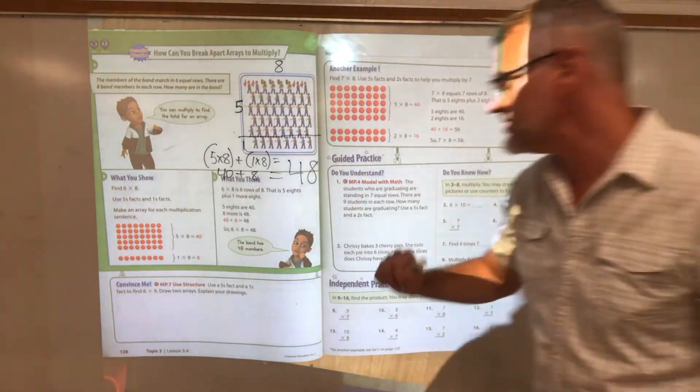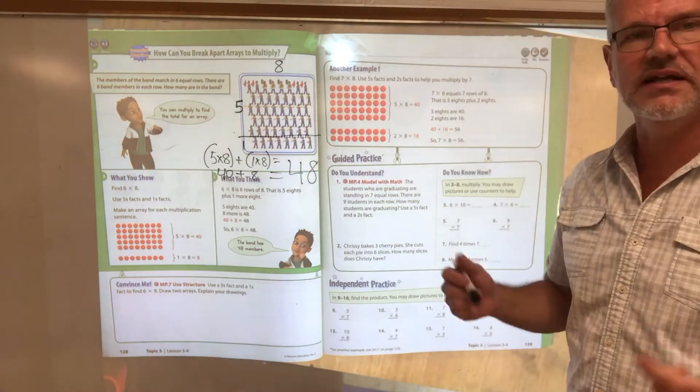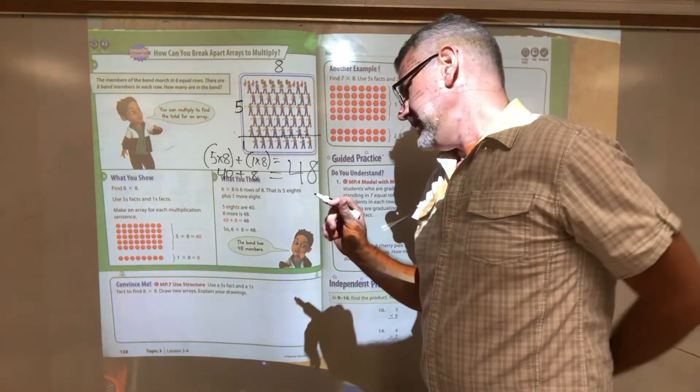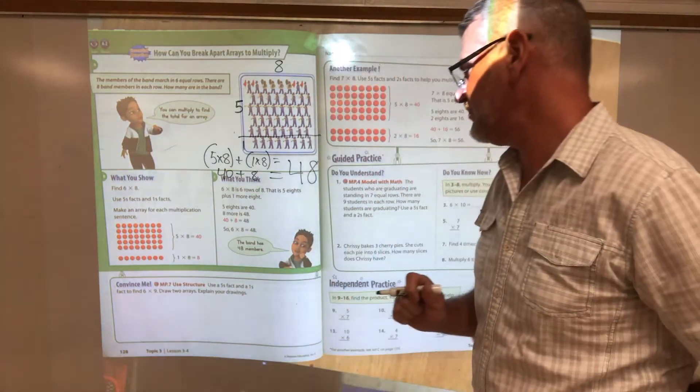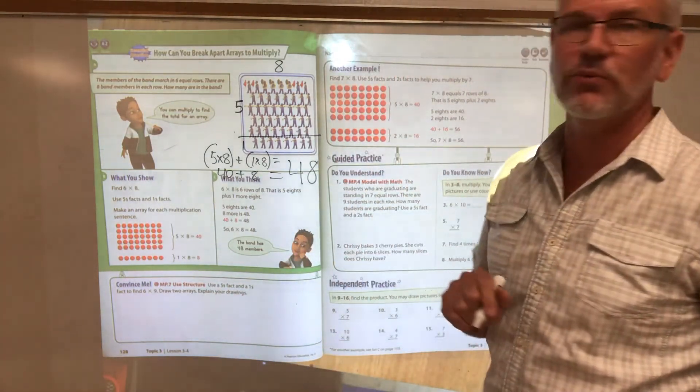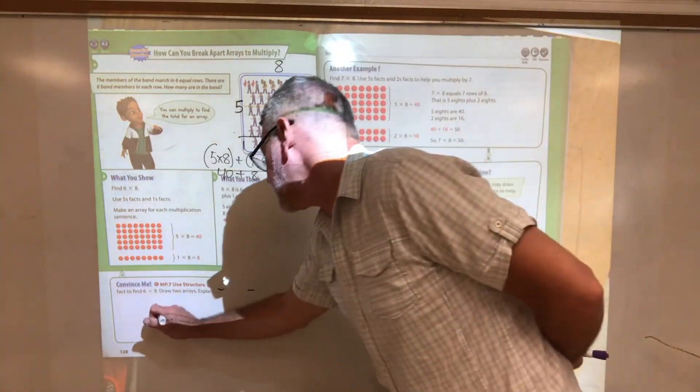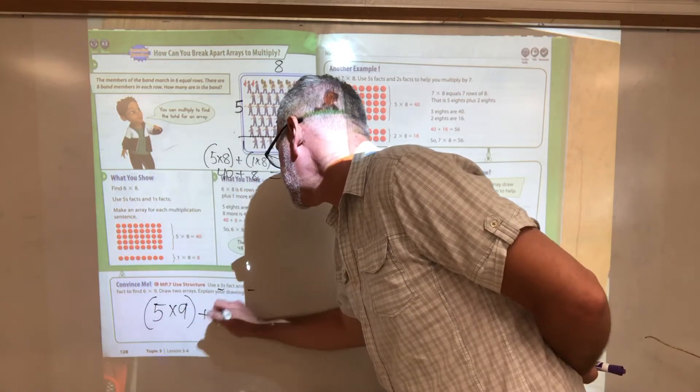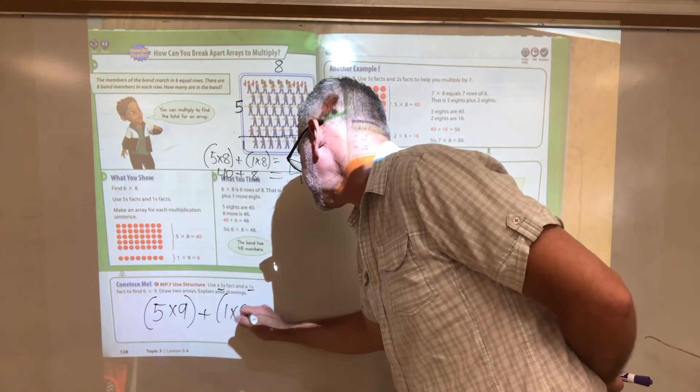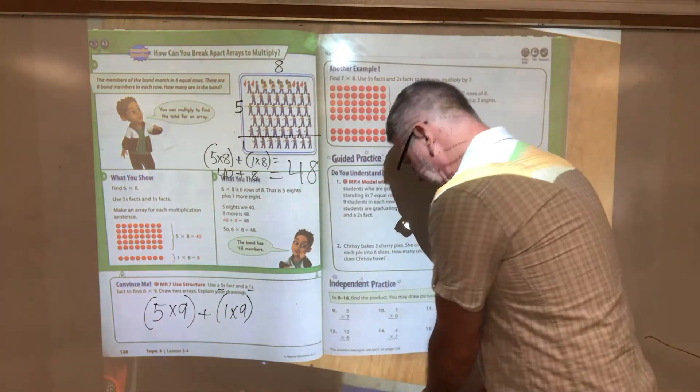Let's look down here. Use a fives fact and a ones fact to find six times nine. I just broke this six into a five and a one. So it would be five groups of nine plus one group of nine. And five groups of nine, you can do the nines trick, or you can count by fives.